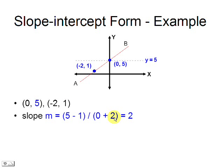We also know that the y-intercept is 5. This means that the slope-intercept equation is y equals 2x plus 5.